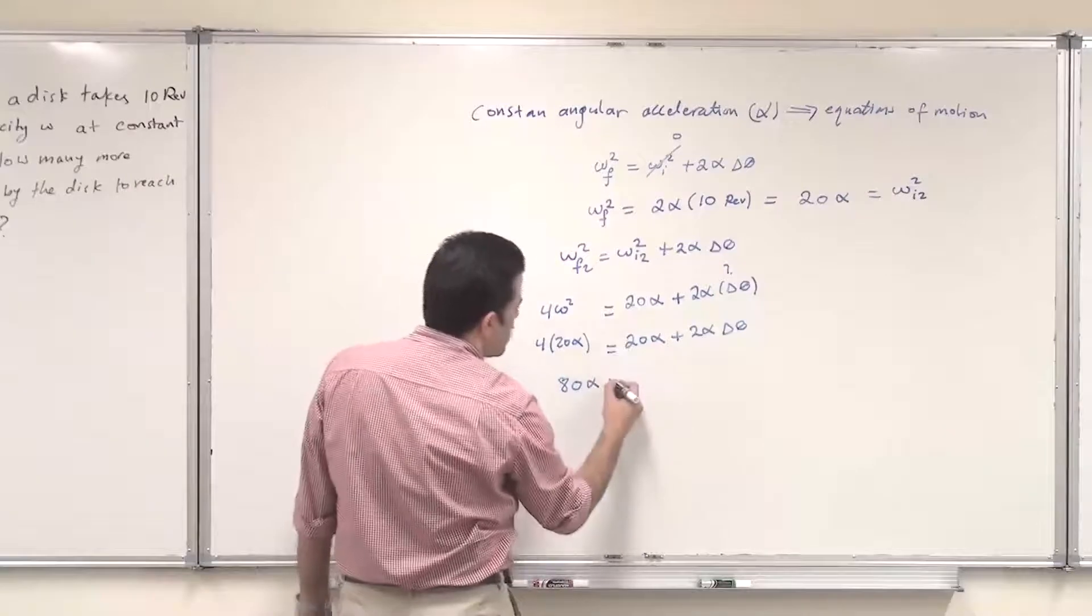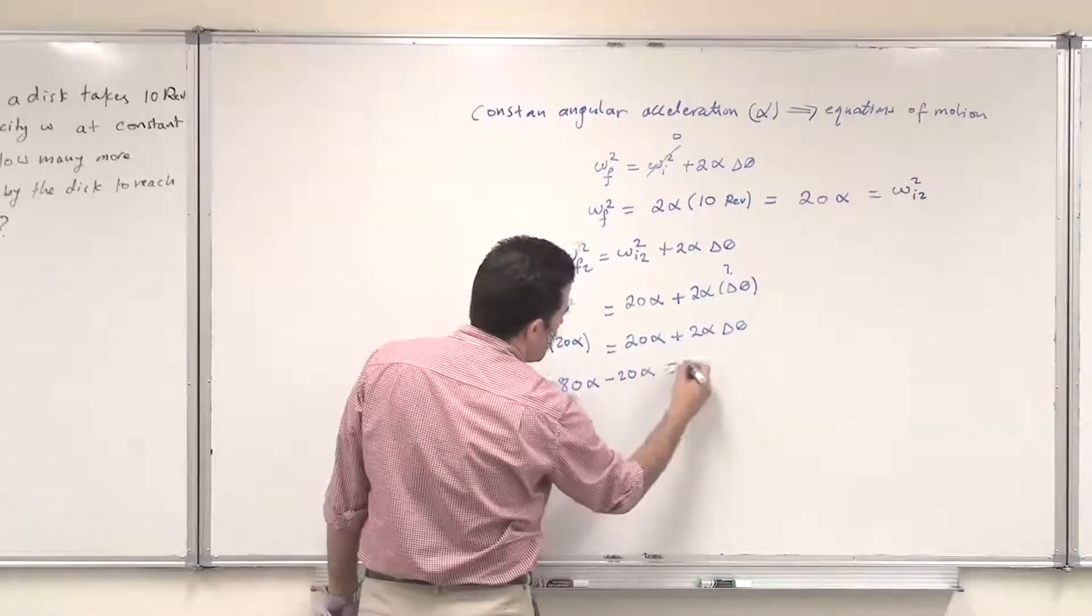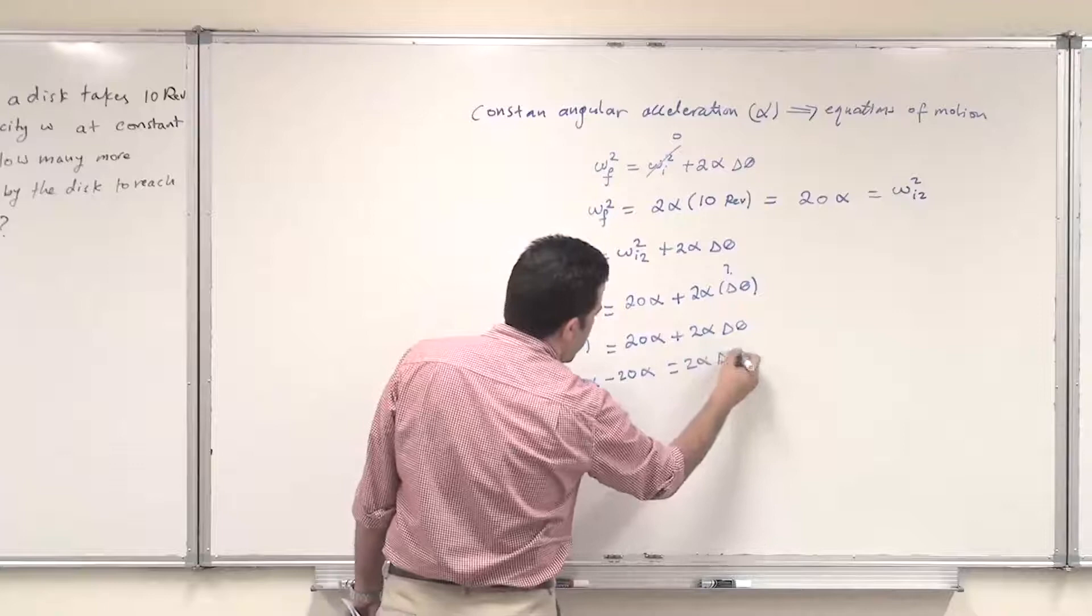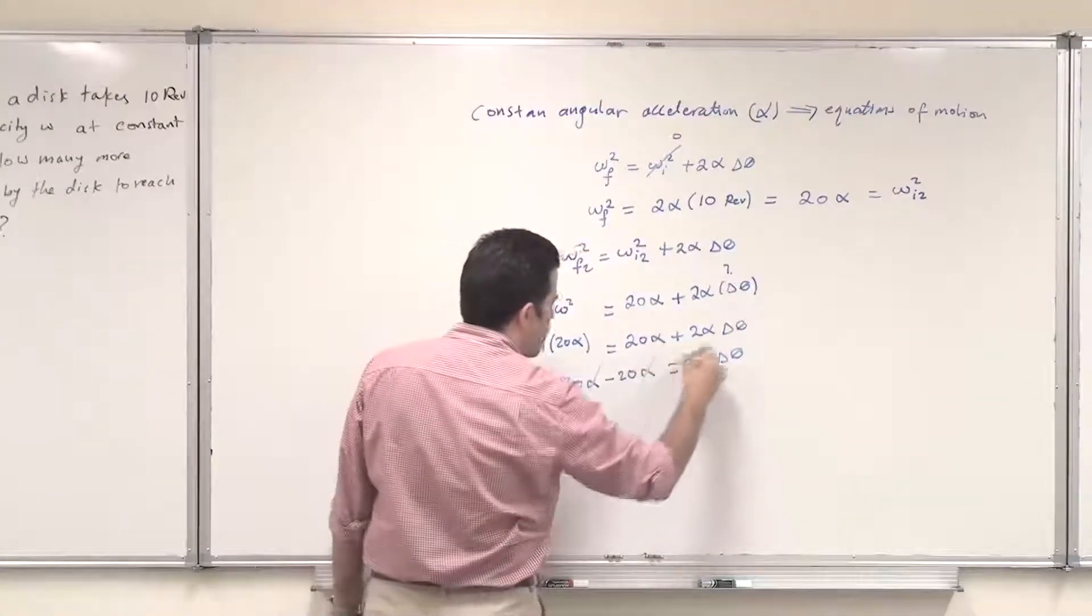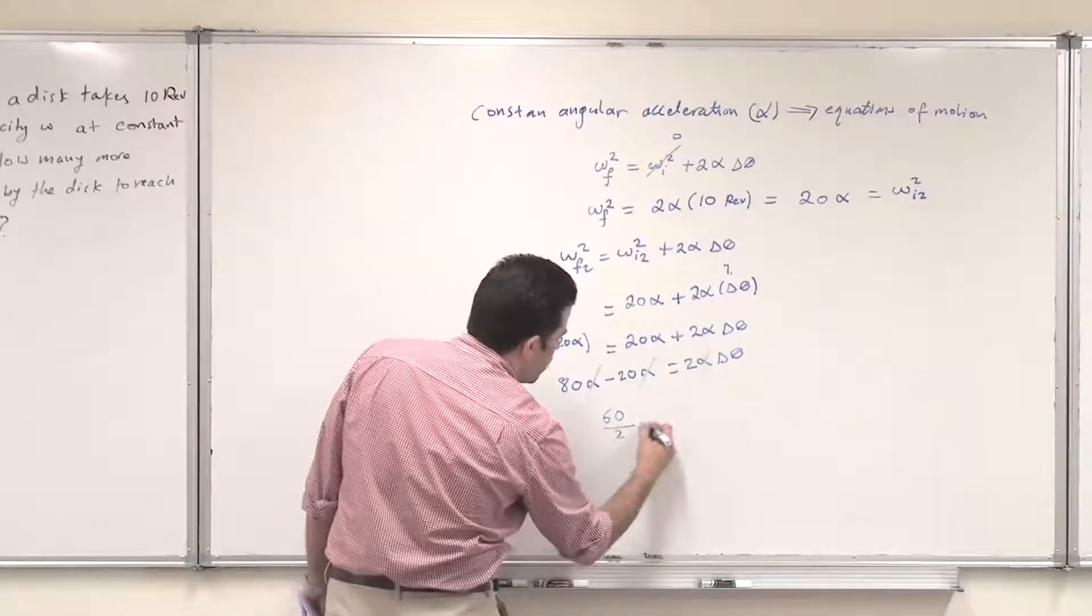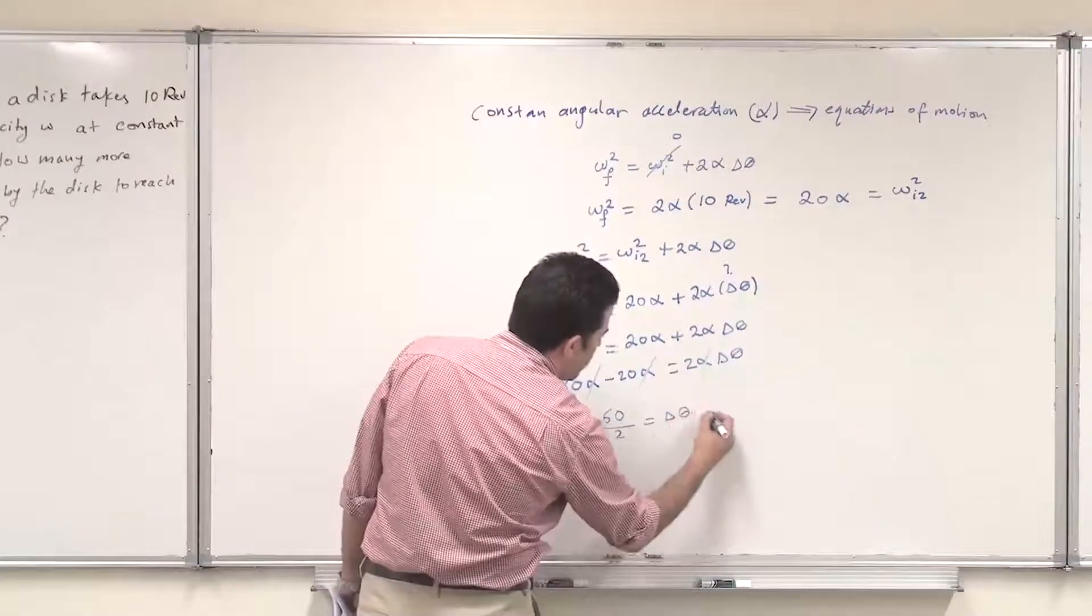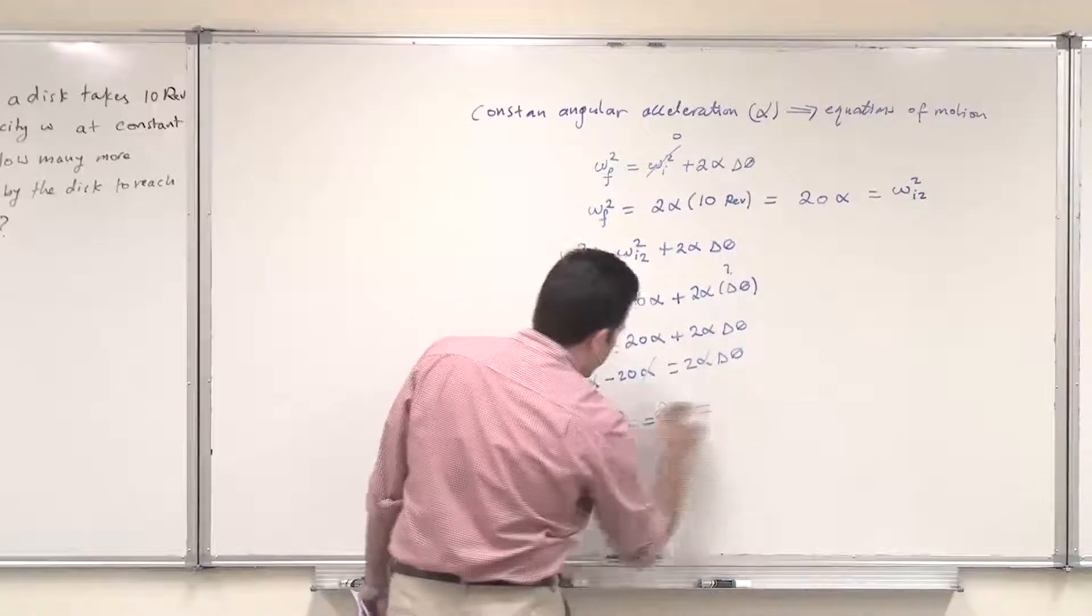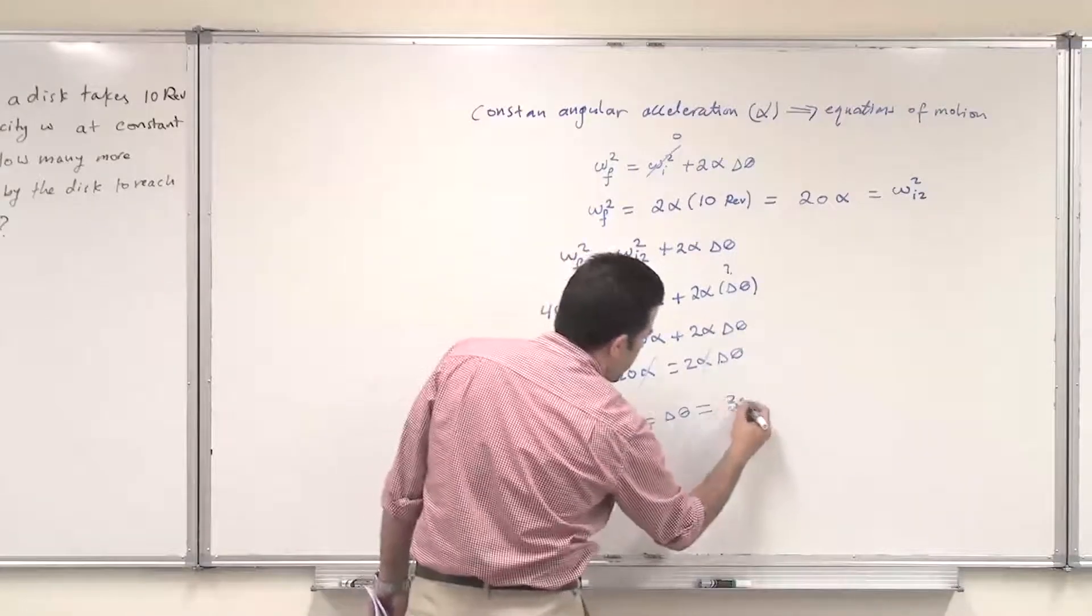Then we take this to the other side. Minus 20 alpha should equal 2 alpha delta theta. We can cancel out alpha from all sides. So 60 divided by 2 will equal delta theta, which is 30 revolutions.